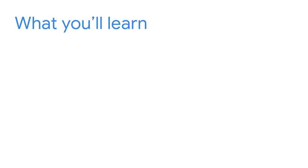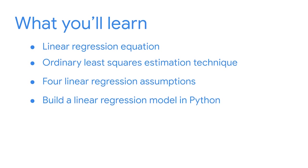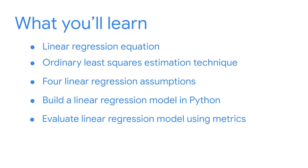Together, we'll go through all the stages of PACE while learning regression modeling. We'll first review the linear regression equation and then learn about estimating parameters using ordinary least squares. Then we'll define each of the four key assumptions of simple linear regression. As for the analyze stage, we'll use Python and EDA to verify if our data meets these assumptions. In the construct stage, we'll build your first regression model in Python together. We'll also learn several evaluation metrics and a technique to help you quantify how good your model is. Lastly, aligned with the execute stage, we'll use our metrics to practice interpreting our results for stakeholders and non-technical audiences.